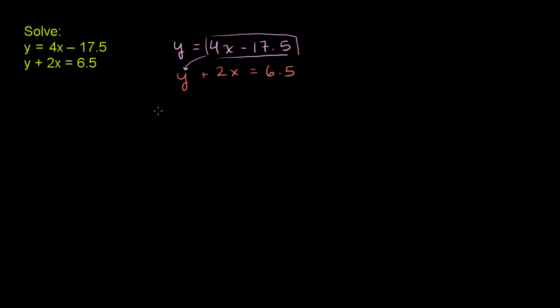So let's take 4x minus 17.5 and substitute y with that. If we replace this y with 4x minus 17.5, because that's what the first equation tells us, then we get 4x minus 17.5 plus 2x is equal to 6.5.